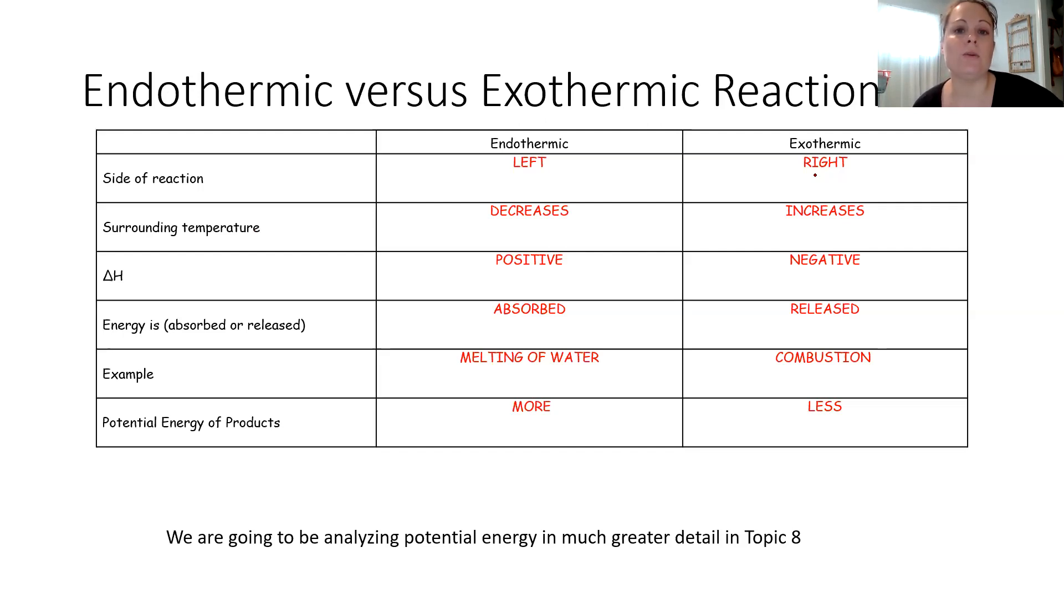In an exothermic reaction, you're going to find energy on the right side because it is exiting or leaving the equation as a product. The surrounding temperature is going to increase or feel hotter because you are releasing energy to your environment. The delta H value here is going to be negative because we are losing energy to the environment. An example here is combustion from your topic two review book. And you're going to have less energy in the products than you did in the reactants, again, because you are losing heat energy to your environment.